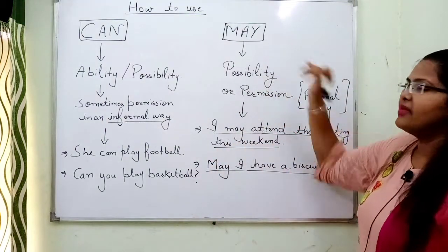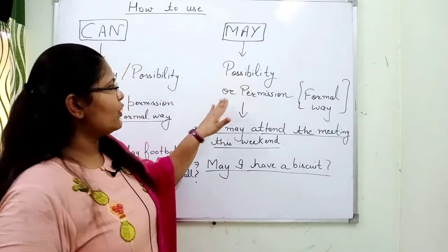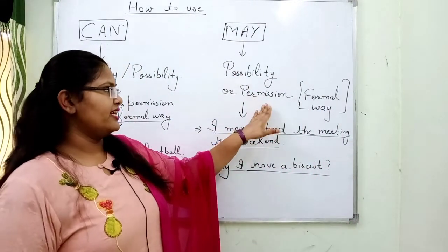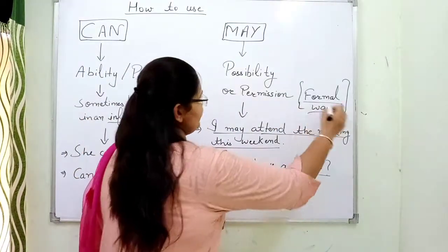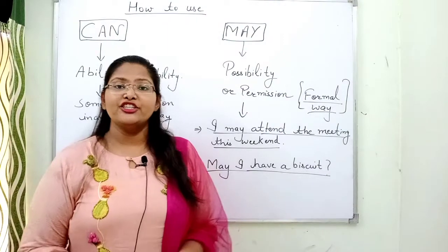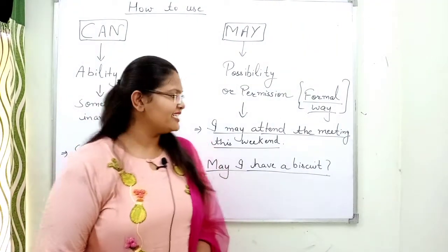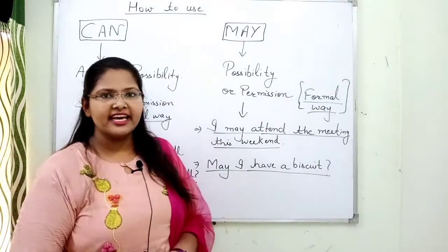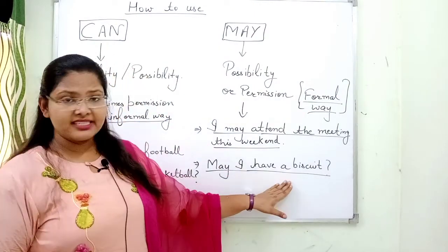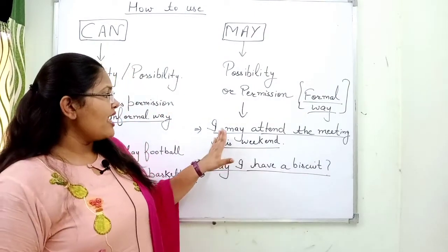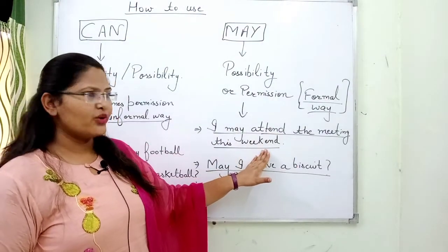And the next one is may. May is used for possibility and permission. But here the permission is in the formal way. For example: may I have a biscuit? Also, I may attend the meeting this weekend — that is showing possibility.